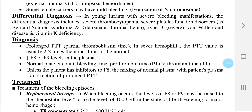Diagnosis of hemophilia: there is a prolonged PTT — in severe hemophilia the PTT value is usually two to three times above the upper limit of normal. There is decreased factor 8 or factor 9 level in the plasma, with normal platelet count, bleeding time, prothrombin time, and thrombin time. Unless the patient has inhibitors to factor 8, mixing of normal plasma with patient's plasma leads to correction of the prolonged PTT.